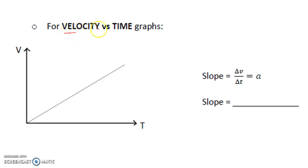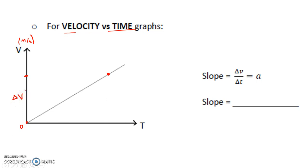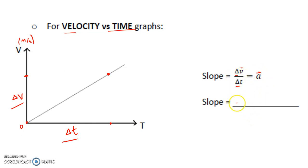Similarly, for velocity-time graphs, if I look at two points I can see I started with zero velocity and now have some velocity. That gives me my change in velocity on the y-axis and change in time on the x-axis. Slope is rise over run — change in velocity over change in time — also known as acceleration.